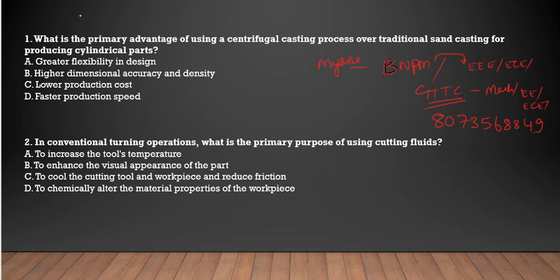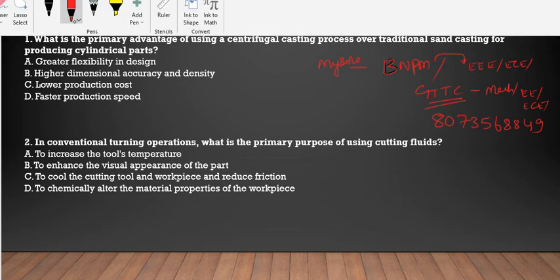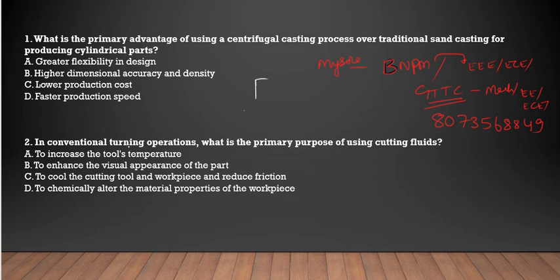Now I will tell you questions related to mechatronics and electronics. What is the primary advantage of using a centrifugal casting process over traditional sand casting for producing cylindrical parts? Let's look at the cylindrical parts. We will try to understand the casting process — liquid is used in the casting process, by the help of centrifugal casting. The other is the traditional sand casting process.